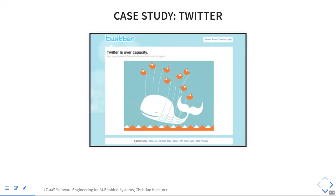Let me race through one case study to give a sense of the scope of software architecture. Who remembers the Twitter fail whale? In the early days of Twitter, this was a very common sign that Twitter was overloaded. Around 2010–2011 it was a frequent occurrence — for example, during the 2010 World Cup, every time there was a goal, Twitter went down because too many people tried to tweet at the same time.